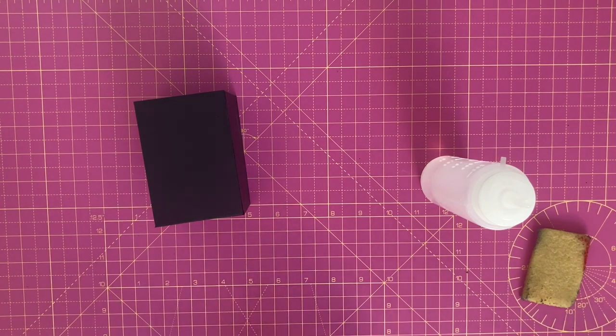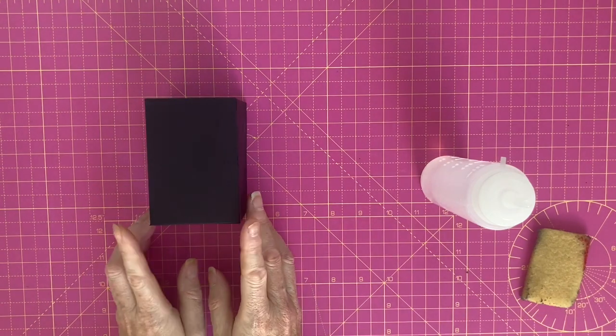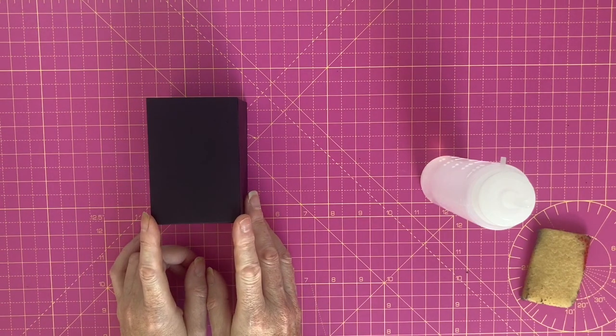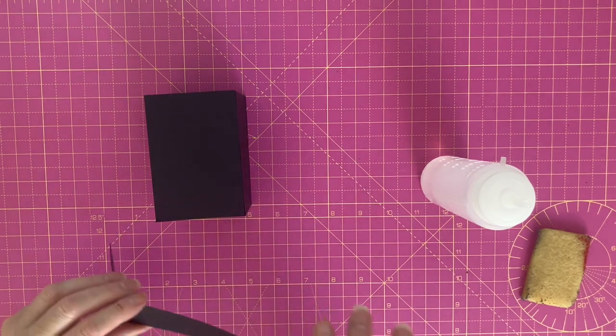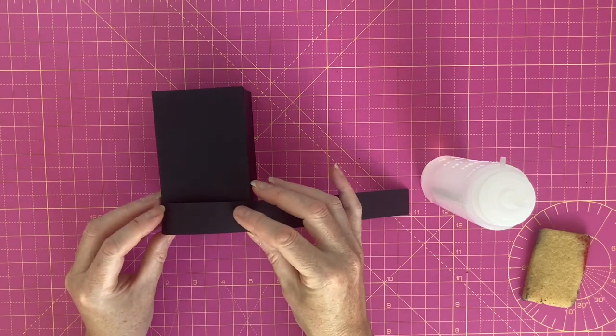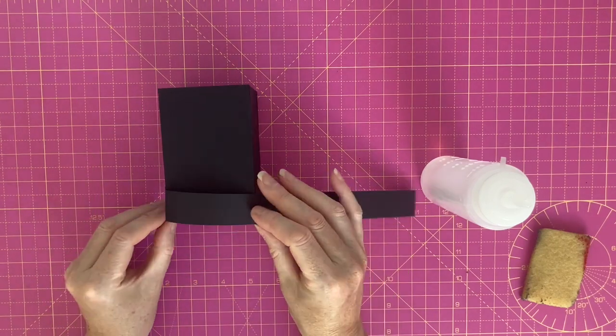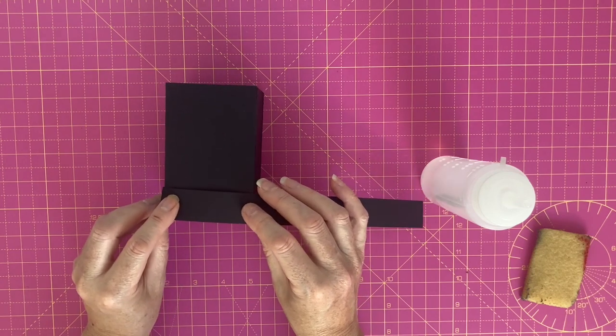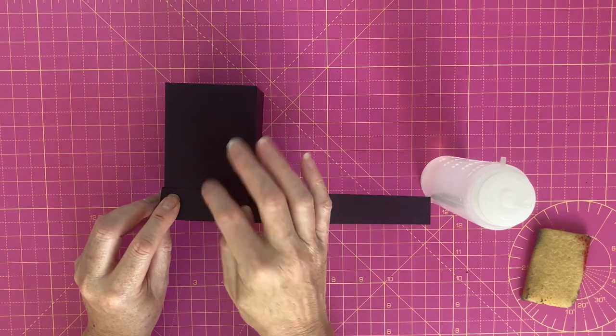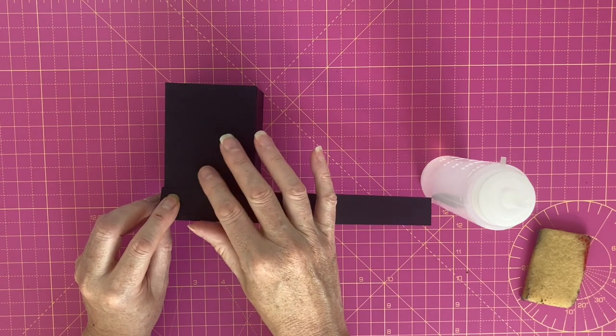To add some interest to the box I thought that I would create a plinth to go round the bottom to create some legs. So I'm going to create that now and put it to one side because I'm not sure whether I'm going to stick it on before or after I add the decorative paper.